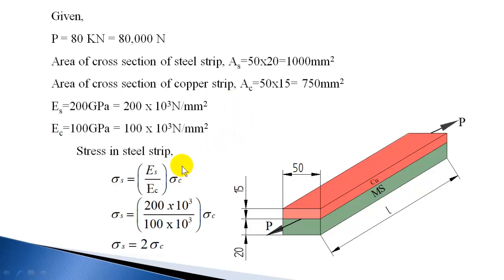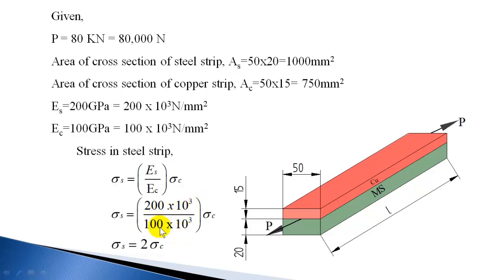Using the two equations for the composite bar, sigma_S = (Es/Ec) × sigma_C. Substituting Es = 200 × 10³ and Ec = 100 × 10³, the 10³ terms cancel, giving sigma_S = 2 × sigma_C. So the stress induced in steel is 2 times the stress induced in copper, meaning the load taken per unit area of steel is twice that of copper.